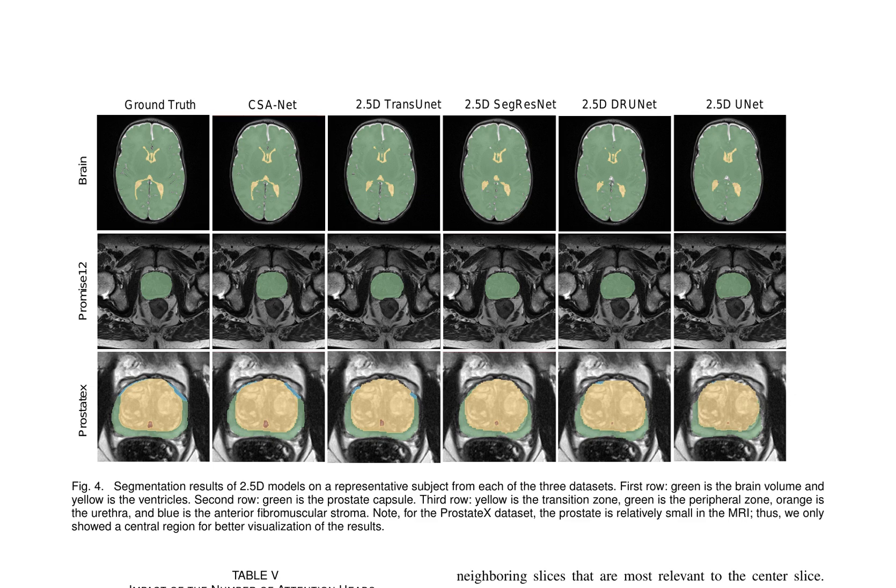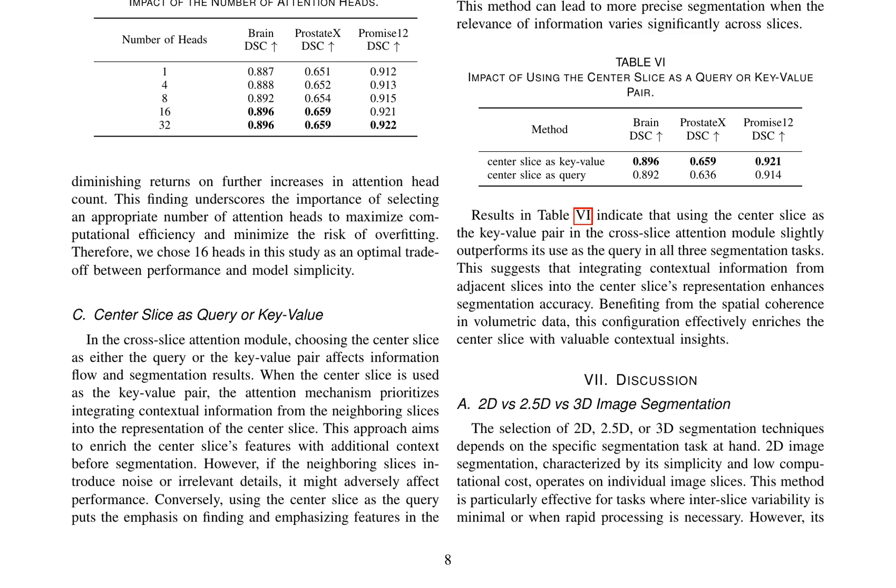The ablation study investigates the importance of key components in CSA-NET, including the cross-slice attention module, the in-slice attention module, and the multi-head attention design, emphasizing their critical role in achieving superior segmentation accuracy. The study also evaluates the choice of the number of attention heads in CSA-NET, indicating that 16 heads emerge as the optimal configuration.